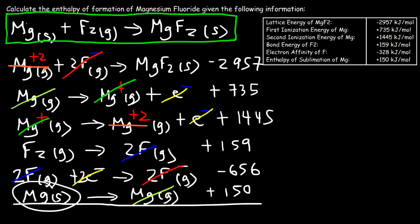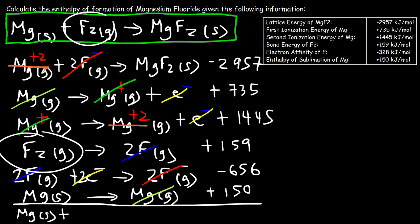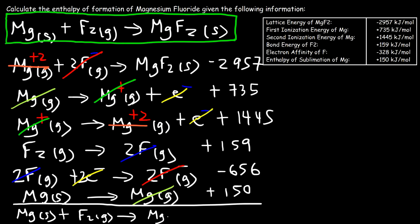On the left side we have solid magnesium (Mg) and gaseous molecular fluorine (F₂ gas), and on the right side the only remaining species is solid magnesium fluoride — exactly the target formation reaction. Because we added all six reactions to get this one, we simply add up all the energy values according to Hess's law: −2,957 + 735 + 1,445 + 159 − 656 + 150, giving an energy change of −1,124 kJ/mol.